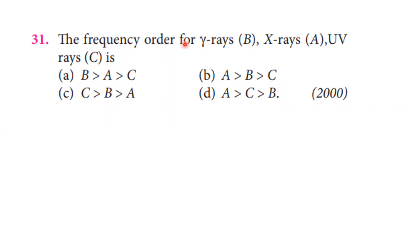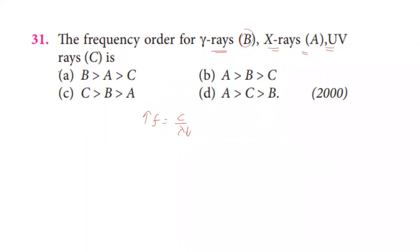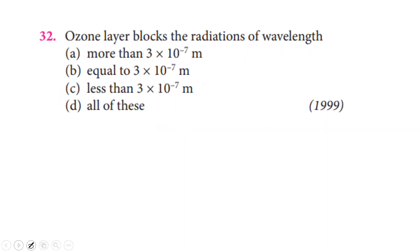The frequency order of gamma rays, X-rays, and ultraviolet rays: decreasing order of wavelength means increasing order of frequency, since frequency equals c divided by lambda and wavelength is inversely proportional to frequency. Gamma rays have the highest frequency, followed by X-rays, then ultraviolet rays. So gamma > X-ray > ultraviolet. The first option is the correct answer.